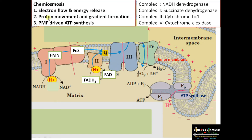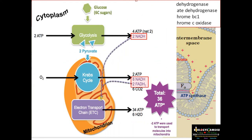According to Peter Mitchell's chemiosmotic hypothesis, there are three major events happening for ATP synthesis. First: electron flow and energy release. Second: proton movement and gradient formation. Third: proton motive force driven ATP synthesis. Let us discuss each one step by step, starting with electron flow.